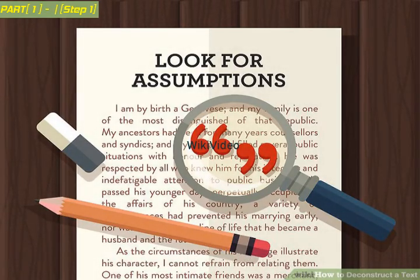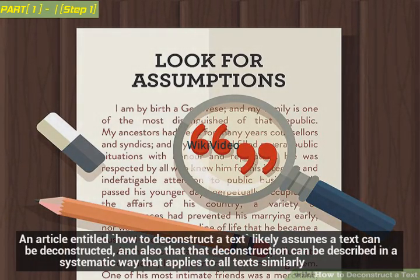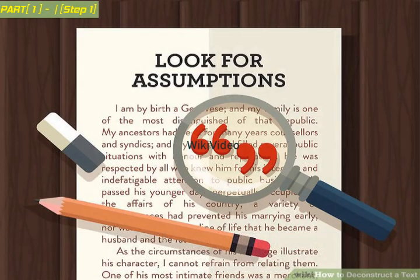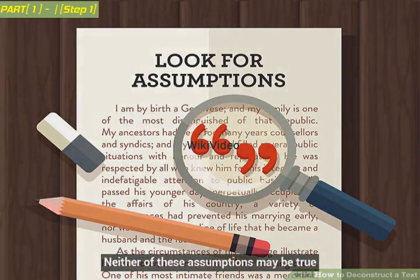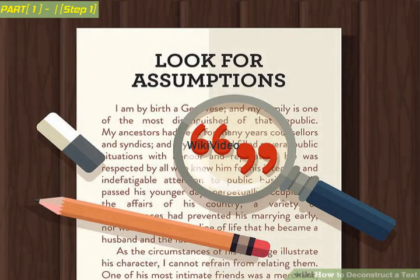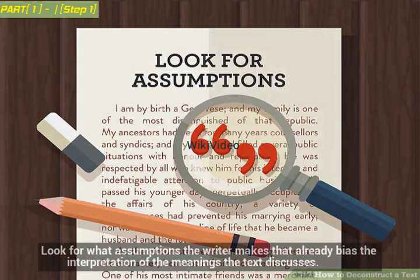Look for the assumptions. An article entitled 'How to Deconstruct a Text' likely assumes a text can be deconstructed, and also that that deconstruction can be described in a systematic way that applies to all texts similarly. Neither of these assumptions may be true. Look for what assumptions the writer makes that already bias the interpretation of the meanings the text discusses.